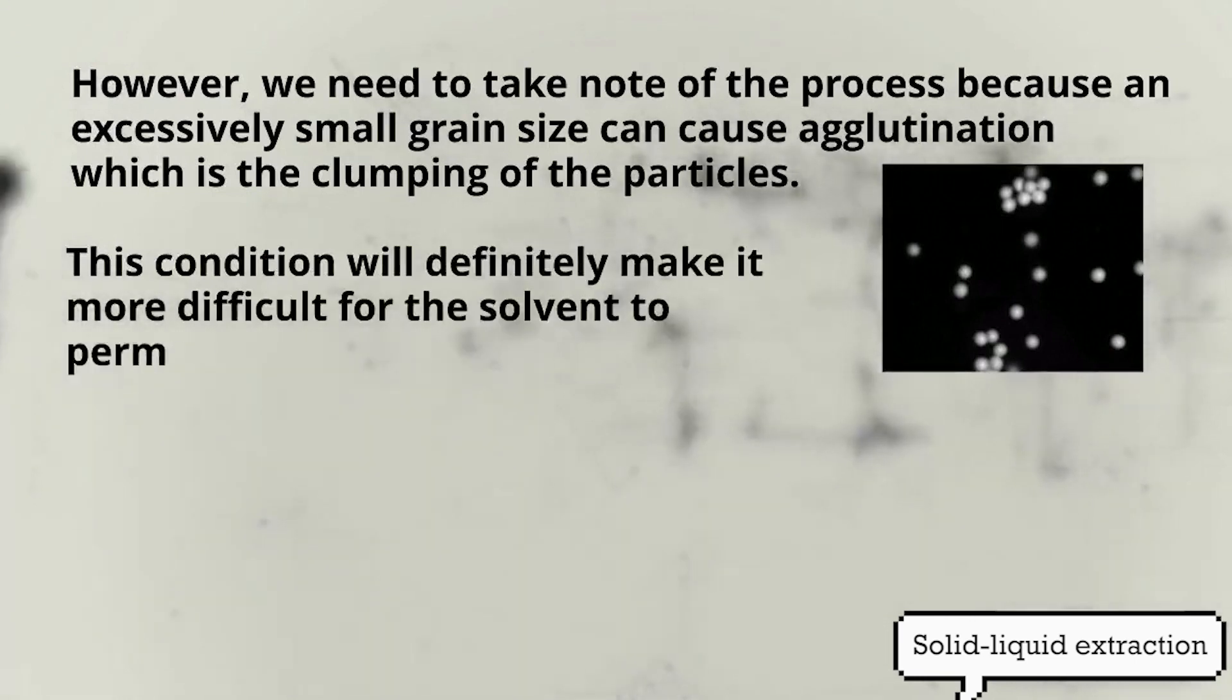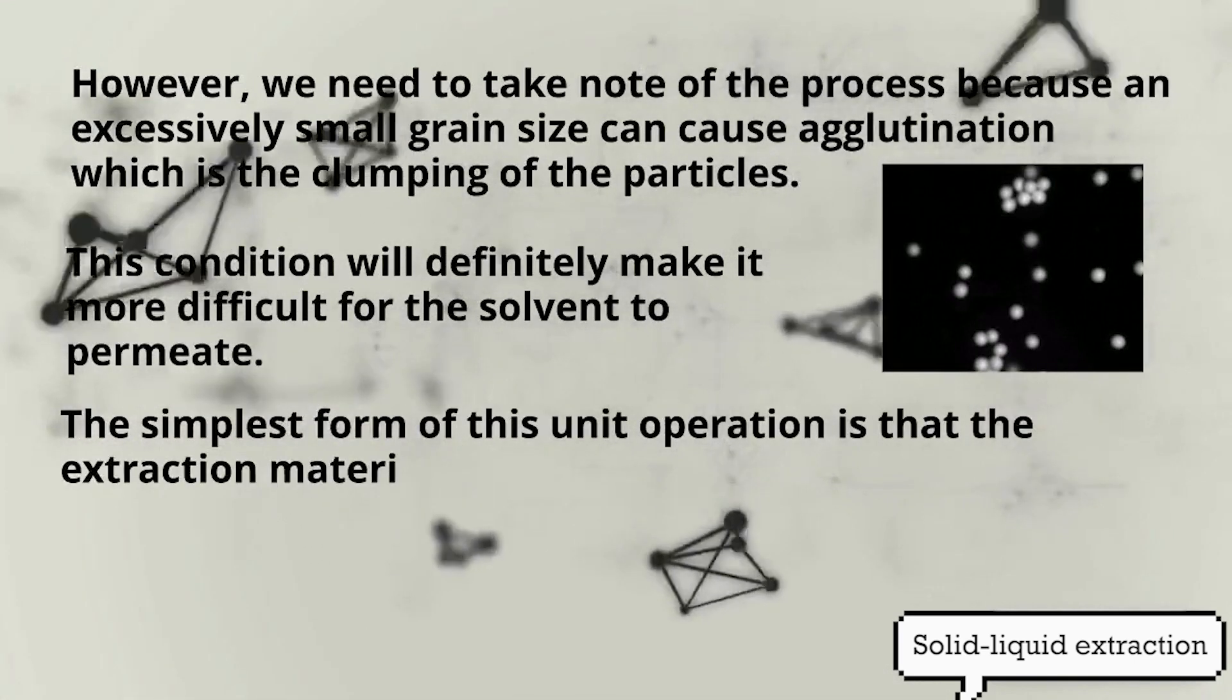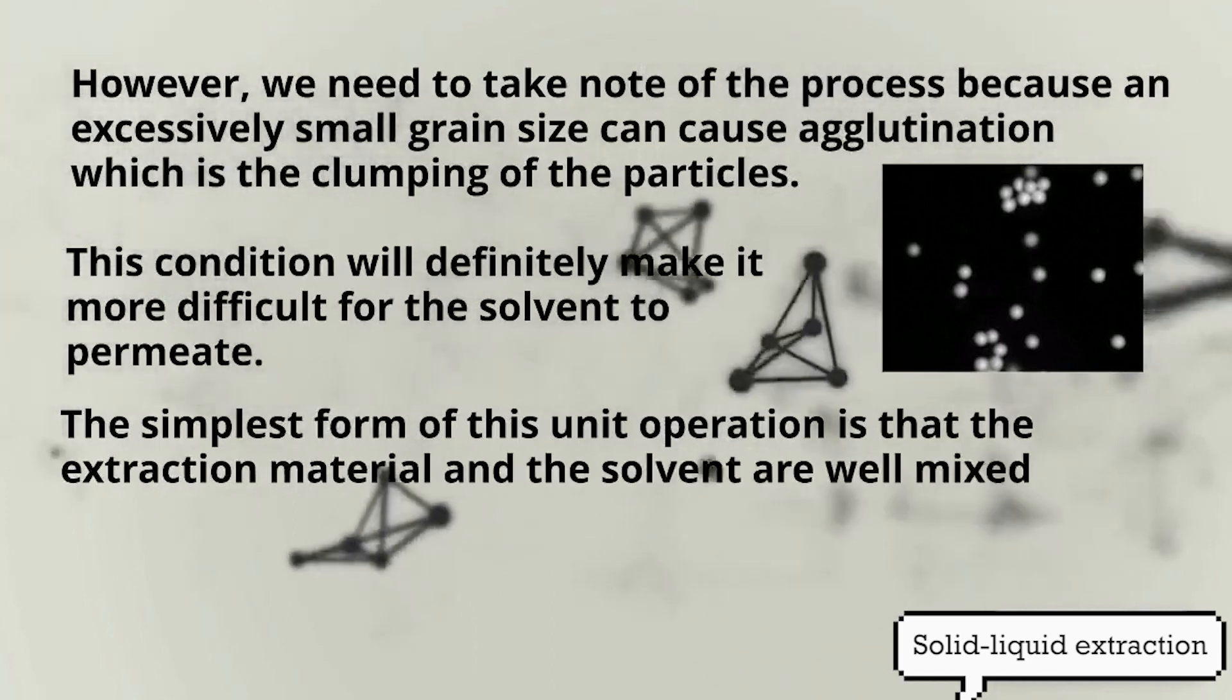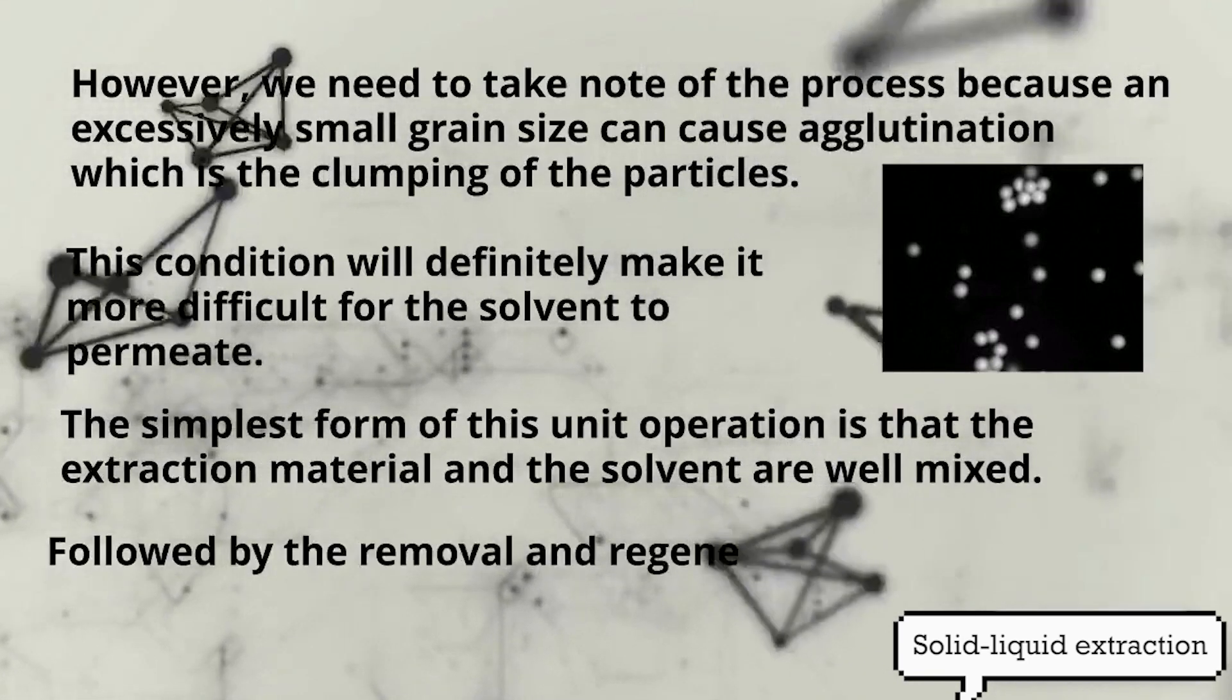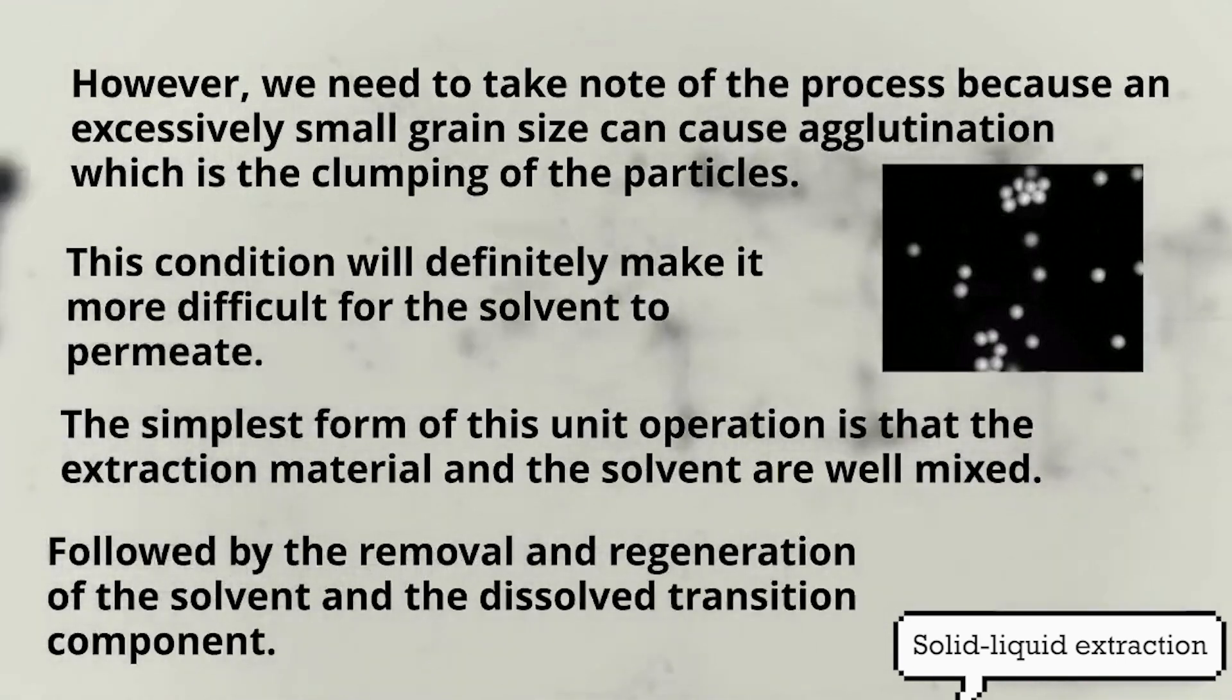This condition will definitely make it more difficult for the solvent to permeate. The simplest form of this unit operation is that the extraction material and the solvent are well mixed, followed by the removal and regeneration of the solvent and the dissolved transition component.